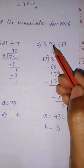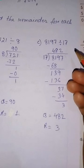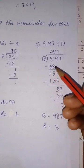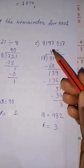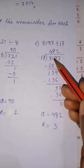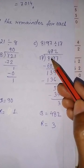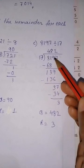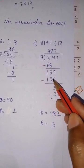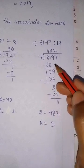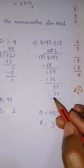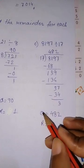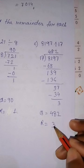Next: 8197 divided by 17. You need to learn the 17 multiplication table, so learn multiplication tables up to 20 thoroughly. 17 fours are 68; 81 minus 68 — borrowing: 11 minus 8 is 3, 7 minus 6 is 1. 97 comes down; 17 eights are 136; 97 minus 68 — 7 minus 7 is 0, bring down. 17 times 17 is 34; subtracting gives remainder 3. The quotient is 482 and the remainder is 3.